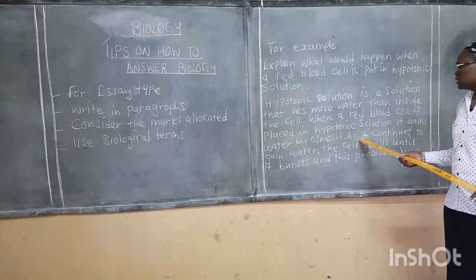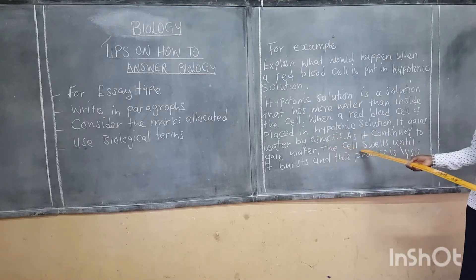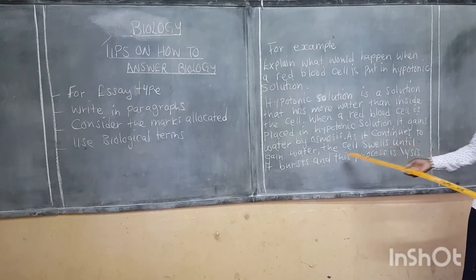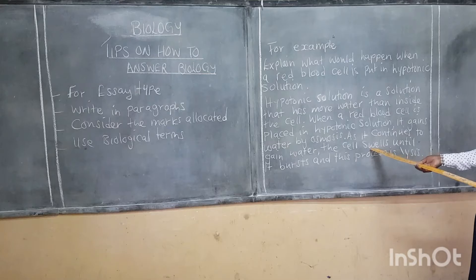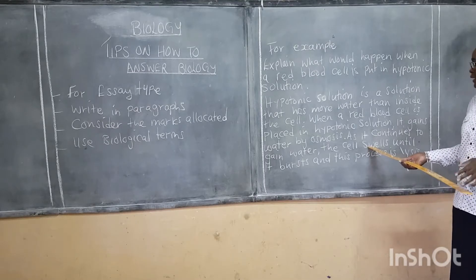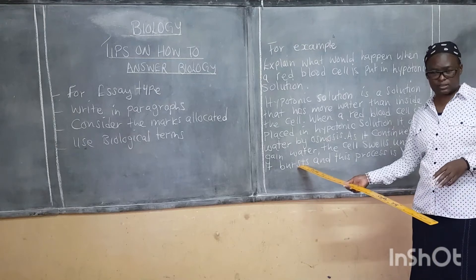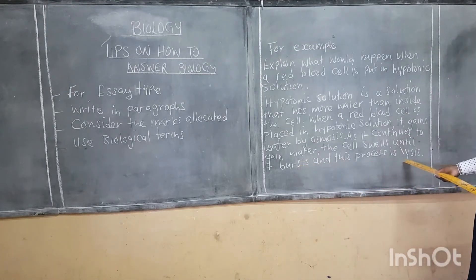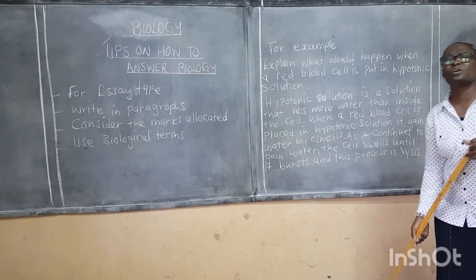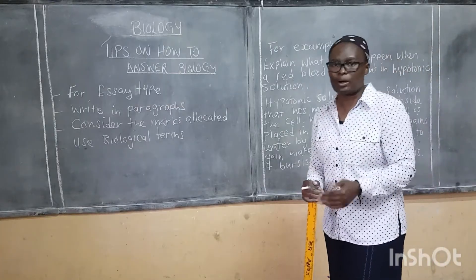As the red blood cell has been placed in a hypotonic solution, it starts to gain water and continues to gain water, so the cell swells or expands and enlarges in size. Since a red blood cell does not have a cell wall, it is going to burst. The process of bursting of the red blood cell is referred to as lysis. This is a biological term meaning that the red blood cell is going to swell and eventually burst.